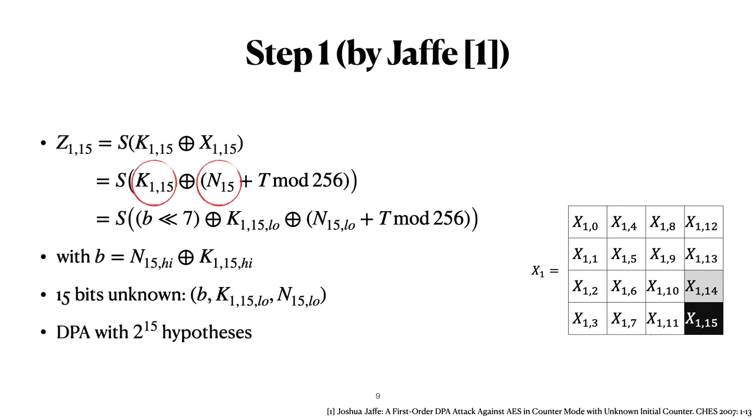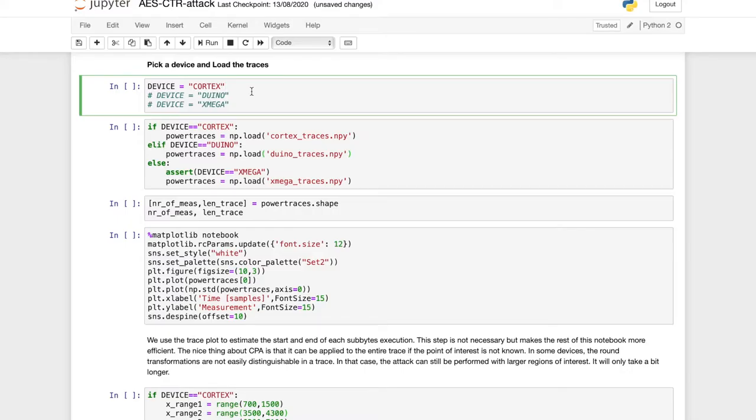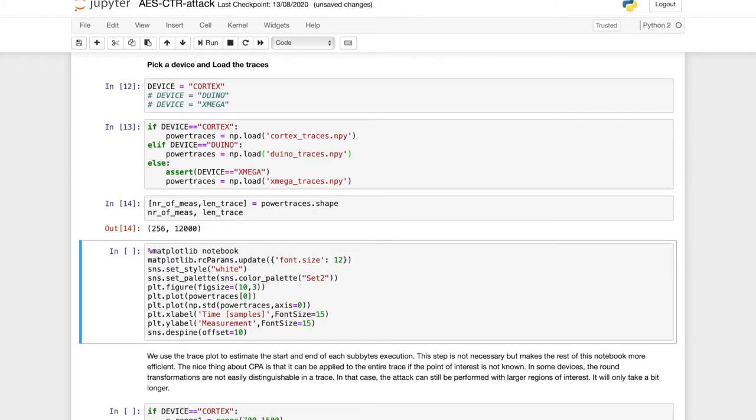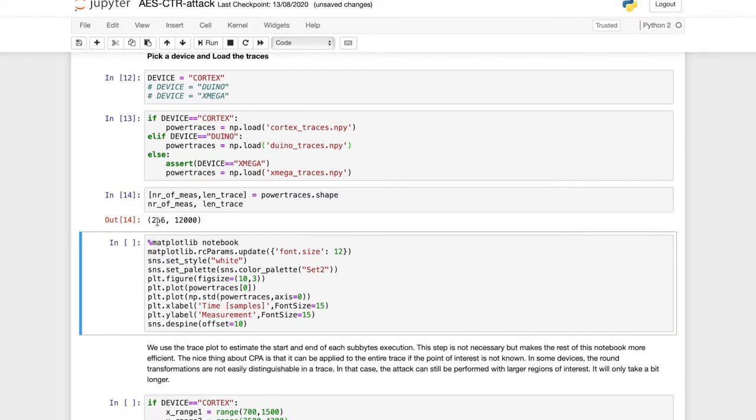Now let's try out this first step on an actual example. So we took traces for multiple devices and I'll use here the example of the Cortex-M4. These are traces that we took with the chip whisperer. And as you can see the set consists of exactly 256 power traces and each trace has 12,000 points.